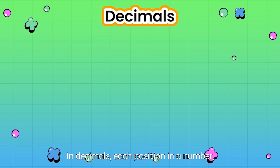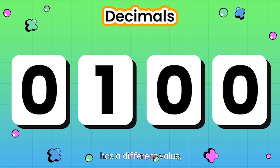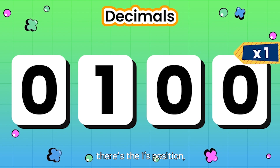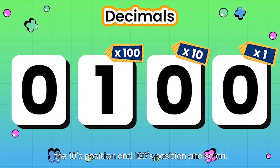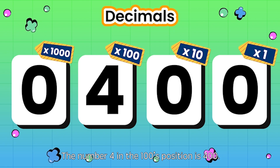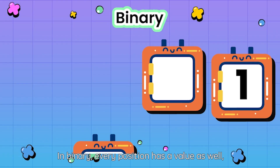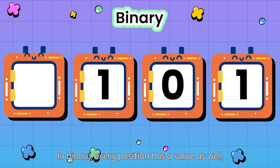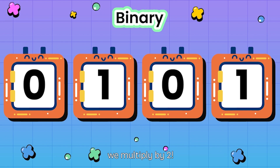In decimals, each position in a number has a different value: the ones position, the tens position, the hundreds position, and so on. The number 4 in the hundreds position is 400. In binary, every position has a value as well, but instead of multiplying by 10, we multiply by 2.